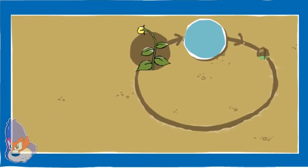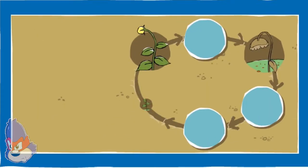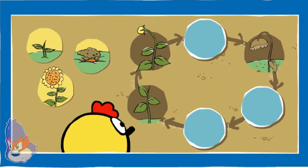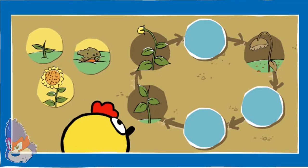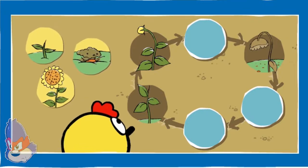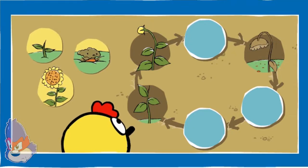Help Peep put things in the right order. Drag the pictures onto the spots in the circle where you think they go. Think about what happens first and what happens next.